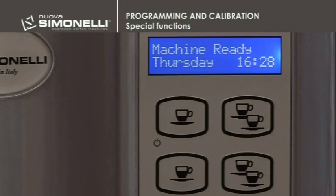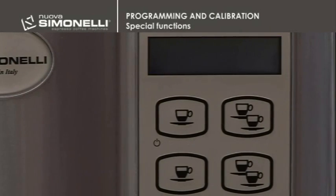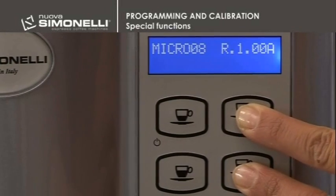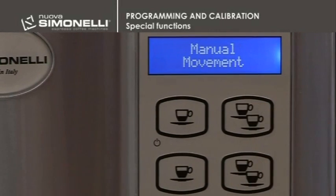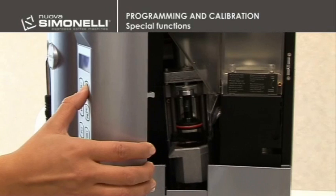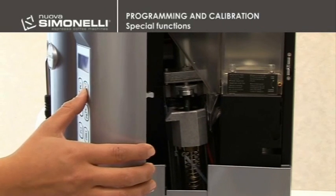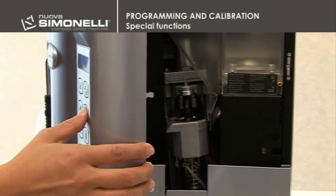It is necessary to switch the machine off using the main switch placed on the back. Push the up arrow key and down arrow key simultaneously, and then switch the machine on keeping the keys depressed. Pushing the up arrow key will move the group upwards; pushing the down arrow key will move the group downwards.